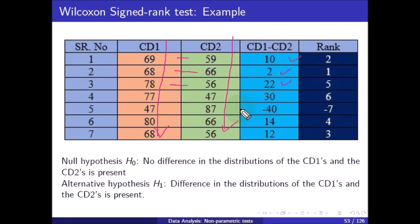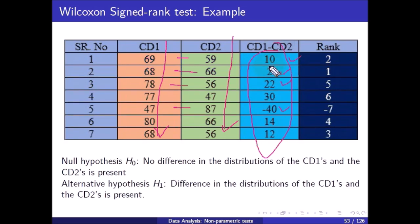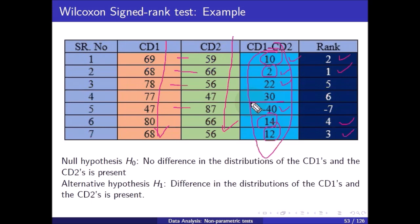Based on the differences, the ranks are assigned: minimum value 2 gets rank 1, next value 10 gets rank 2, 12 gets rank 3, 14 gets rank 4, and so on. The only negative difference is minus 40, which receives rank minus 7 (the largest magnitude), and all remaining differences are positive.